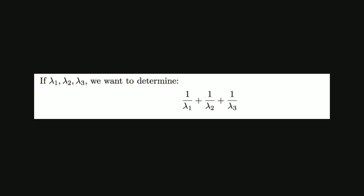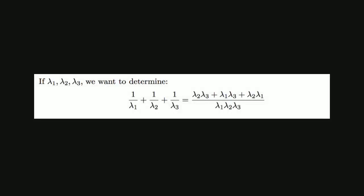So if we label the eigenvalues lambda 1, lambda 2, and lambda 3, we want to determine 1 over lambda 1 plus 1 over lambda 2 plus 1 over lambda 3. And we can rewrite this in the following way, by finding a common denominator for the fractions on the left.